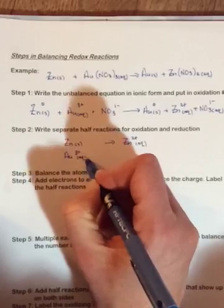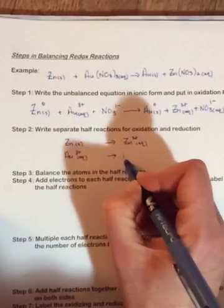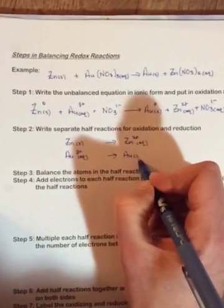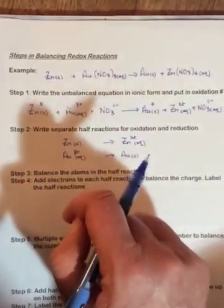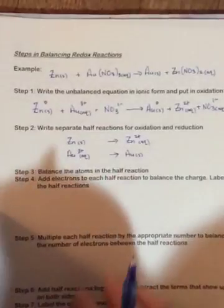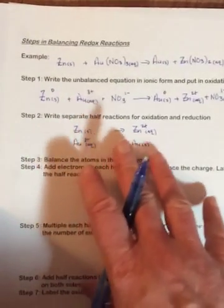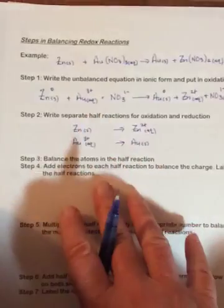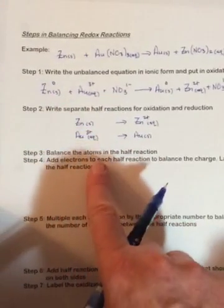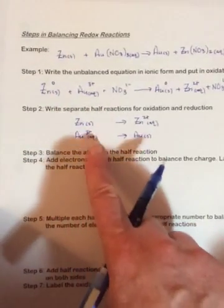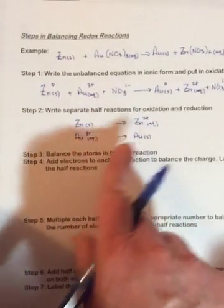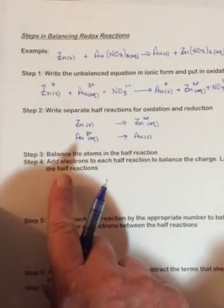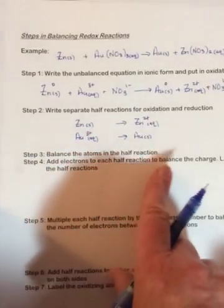Look at the nitrate: negative one, negative one—it's the spectator again. Okay, so we've separated the things for the half reactions. Now in step three it says balance the atoms. So one zinc, one zinc balanced. One gold, one gold balanced. Add electrons to each half reaction to balance the charge.